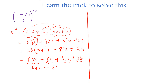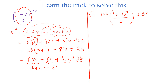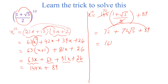Now, x is equal to 1 plus square root of 5 divided by 2. We put this value in, so x^12 is equal to 144 times (1 plus square root of 5) divided by 2, plus 89. Since 144 divided by 2 is 72, we multiply 72 by 1 to get 72 plus 72√5, plus 89. And 89 plus 72 is equal to 161 plus 72 square root of 5.